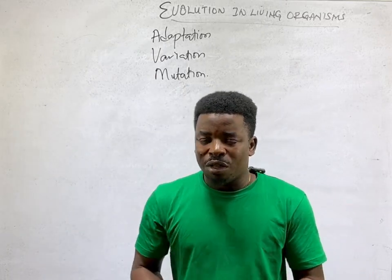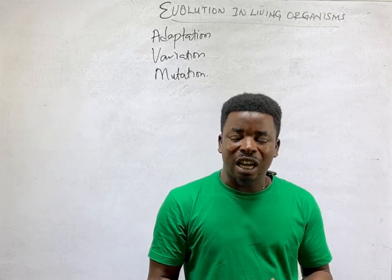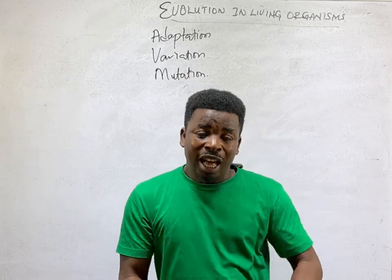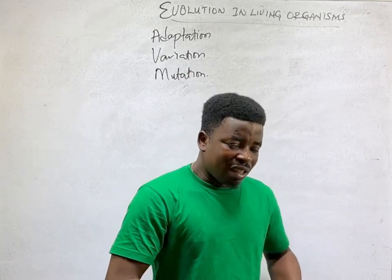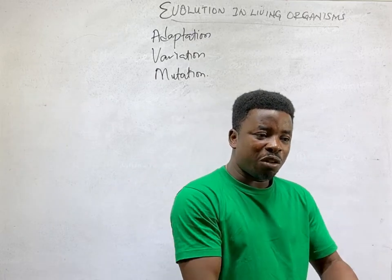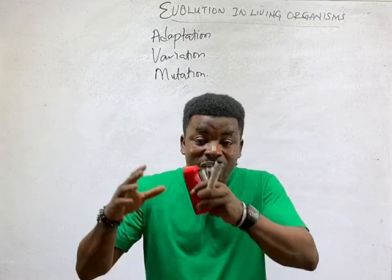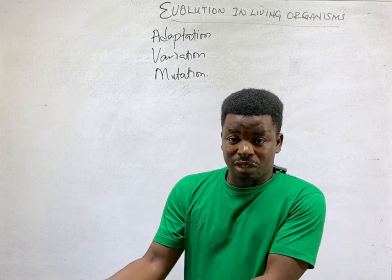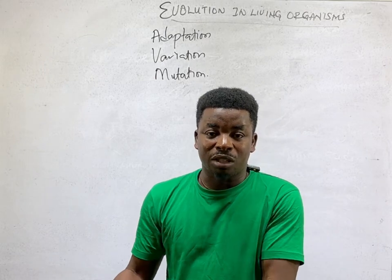And that organism has now developed something that is different from the normal species. So over time, when that trait has been passed down to different offspring, we now start having a different species from the original one. And that is adaptation, and that is evolution.